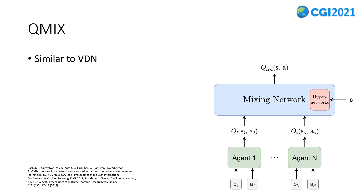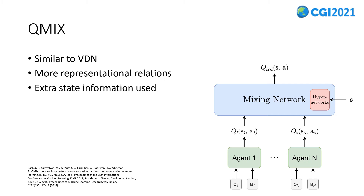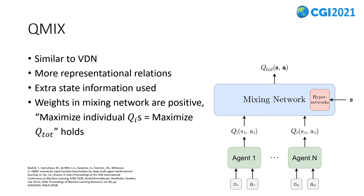QMix is an algorithm very similar to VDN. It resolves VDN's problems by using a mixing network, which takes the state information as input to generate weights that allow a more expressive representational relationship between the joint value function and individual value functions. The weights in the mixing network are constrained to be positive, so that maximizing individual value functions still maximizes the joint value function.